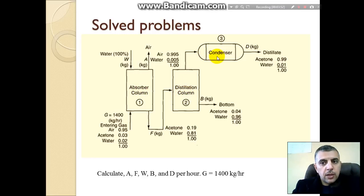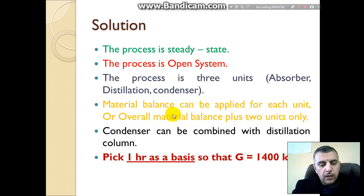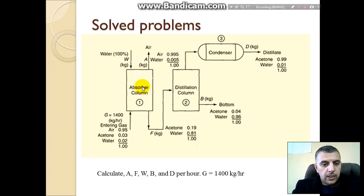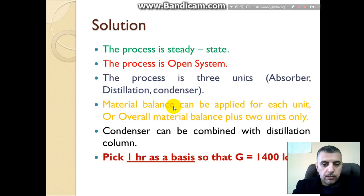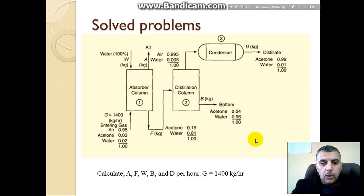The process has three units: unit number one is the absorber column, unit number two is the distillation column, and unit number three is the condenser. Material balance can be applied to each unit individually, or you can take the material balance for the whole system.